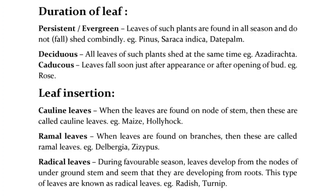Leaf insertion: Cauline leaves — when leaves are found on the node of the stem, they are called cauline leaves, e.g., Maize and Hollyhock. Ramal leaves — when leaves are found on branches, they are called ramal leaves, e.g., Dalbergia and Ziziphus. Radical leaves — during the favorable season, leaves develop from the nodes of the underground stem and seem to be developing from roots; this type of leaves is known as radical leaves, e.g., radish and turnip.